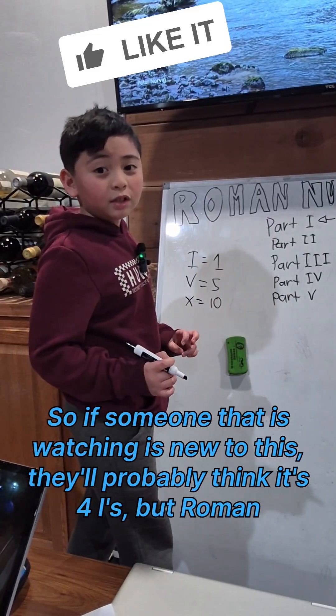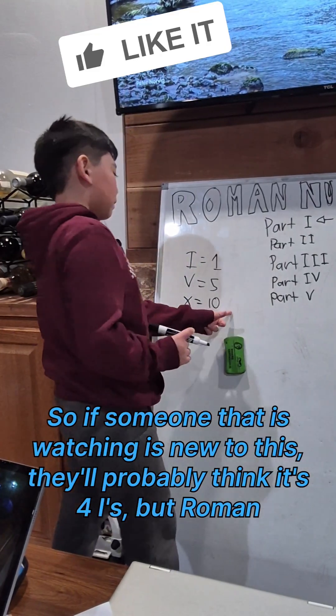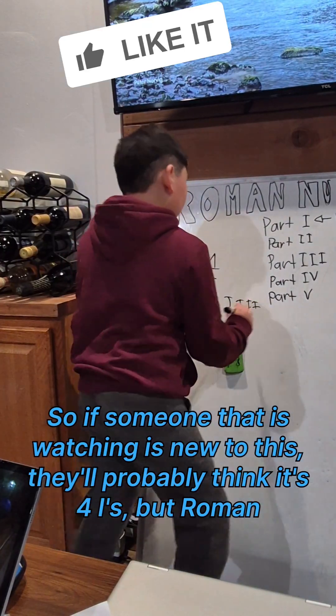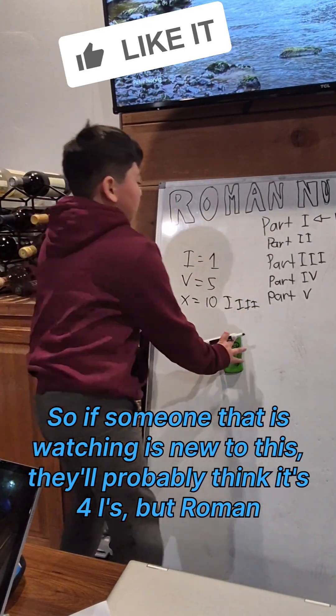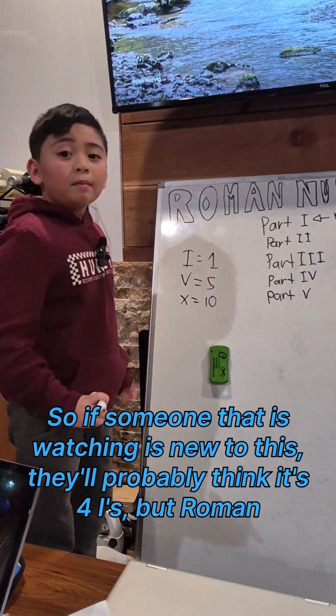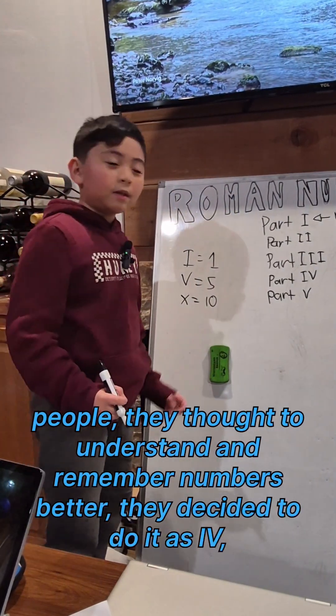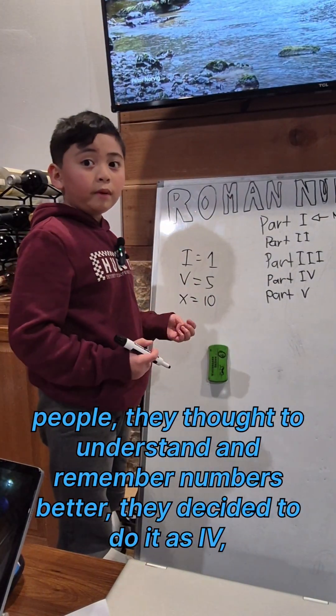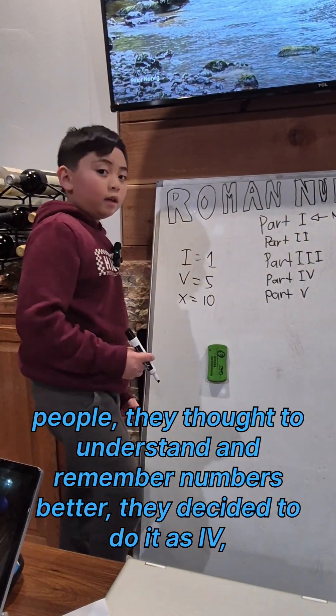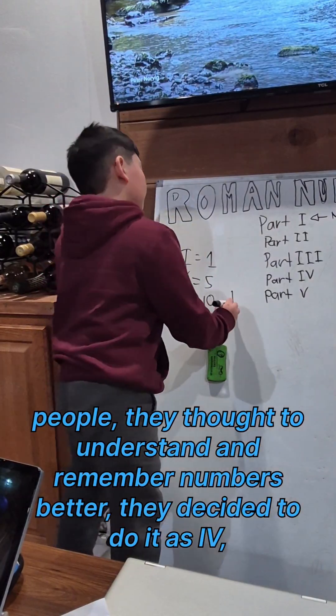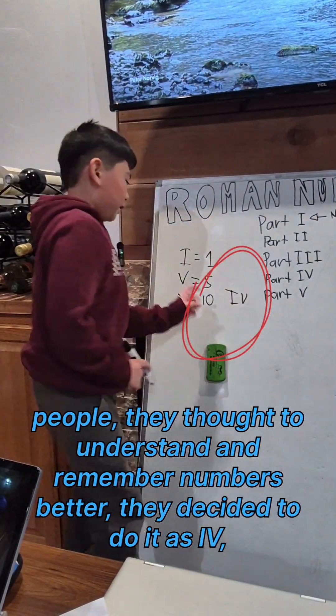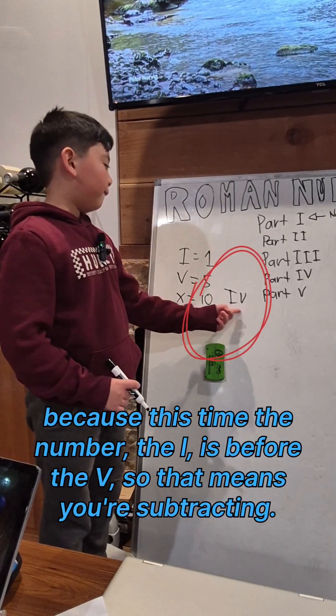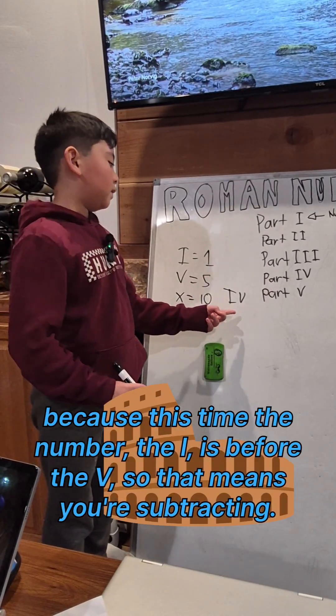If someone watching is new to this, they'll probably think it's four Is. But Roman people thought to understand and remember numbers better, they decided to do it as IV. Because this time the I is before the V, so that means you're subtracting. So 5 minus 1 is 4, so IV equals 4.